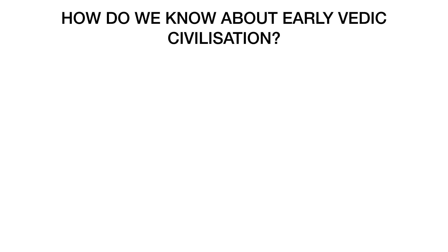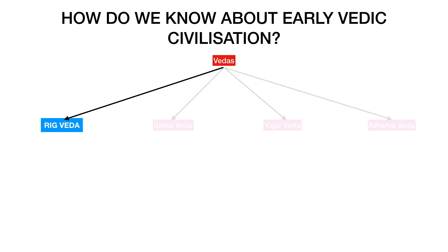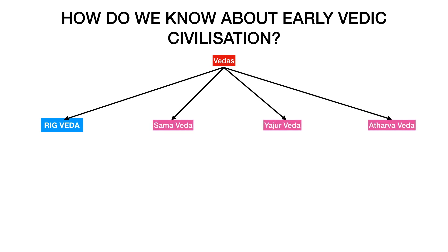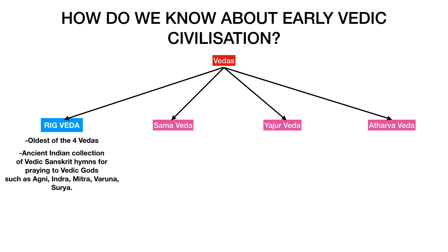The question of how we know about the early Vedic civilization has a clear answer: early Vedic civilization is known to us from the Rig Veda. Rig Veda is a part of the Vedas. Vedas are divided into four parts — Rig Veda, Sam Veda, Yajur Veda, and Atharva Veda. The early Vedic period is mentioned in the Rig Veda, which is the oldest of the four Vedas.